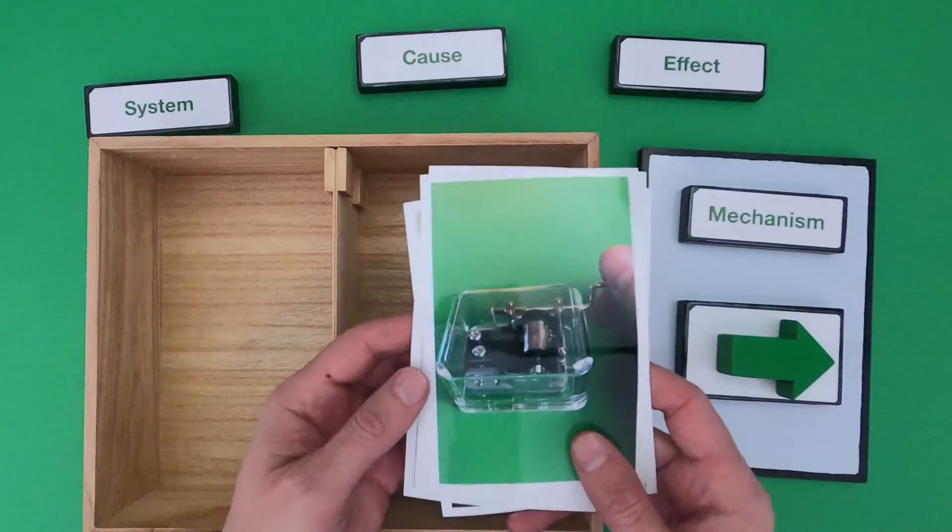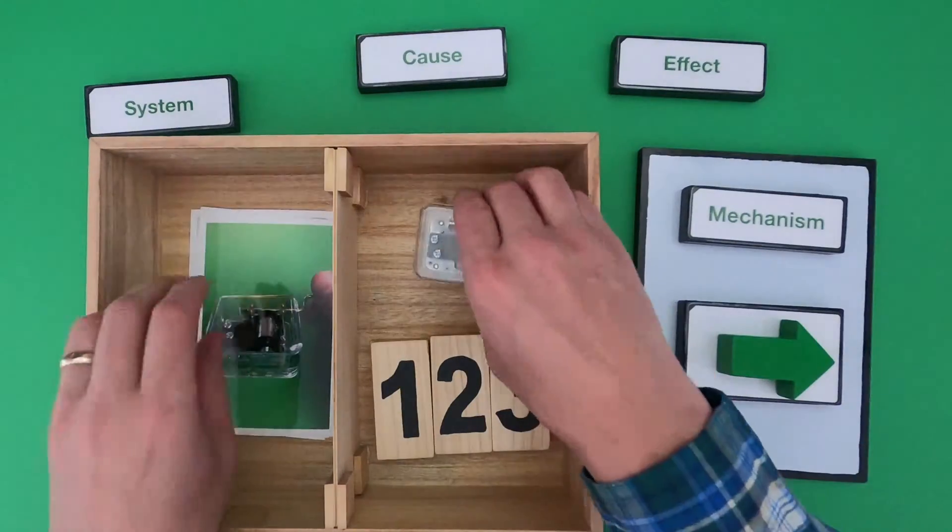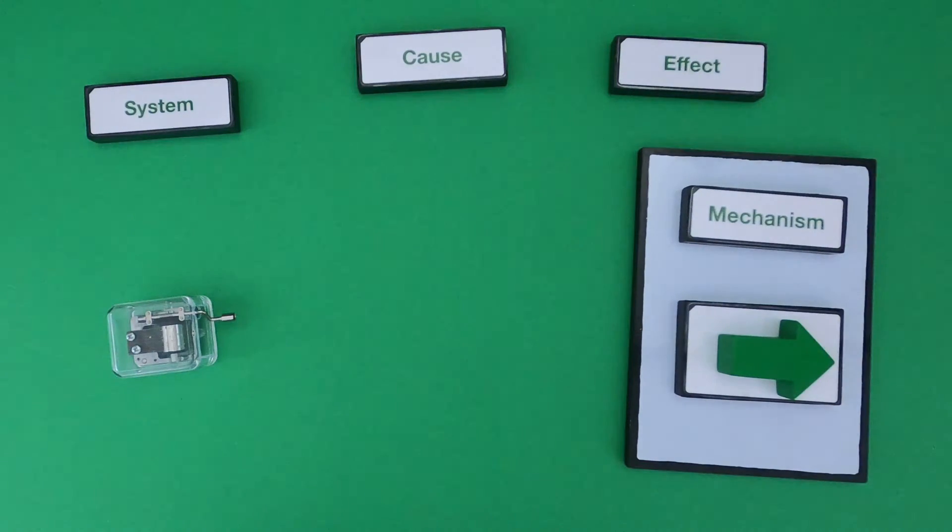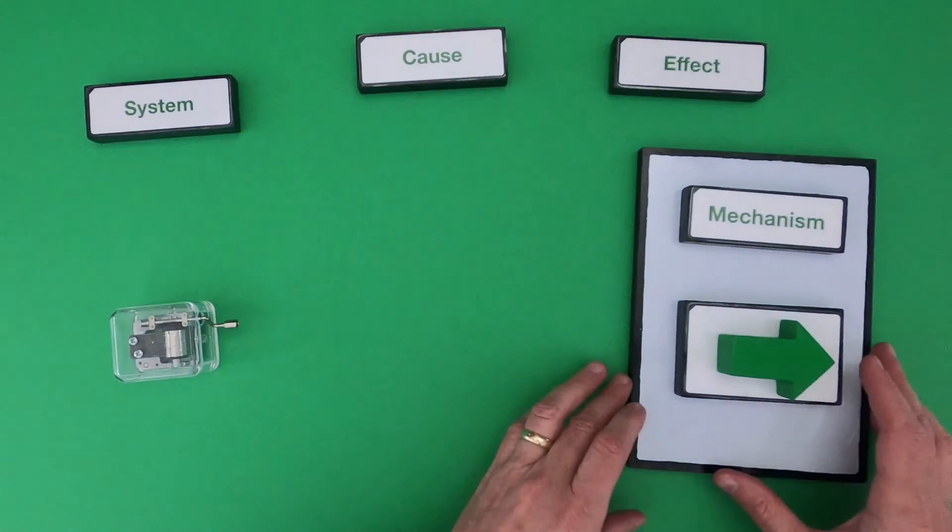But I'm going to start by showing you my thinking using a simple music box as a system and then we'll work the dominoes together. So first of all let me organize the cause, mechanism, and effect.